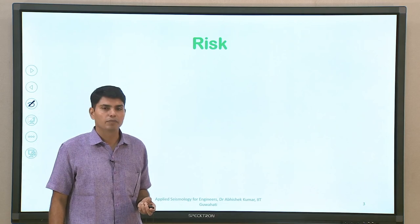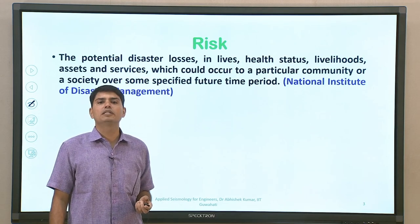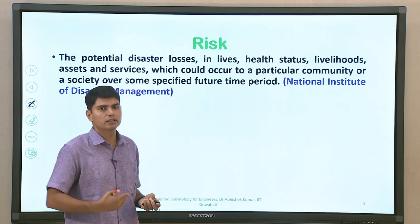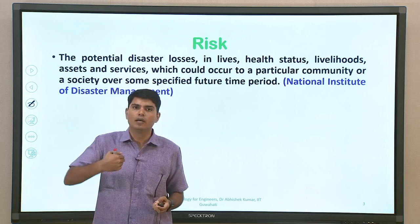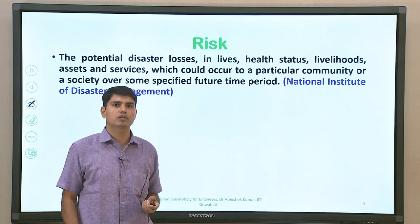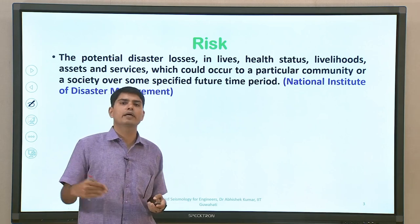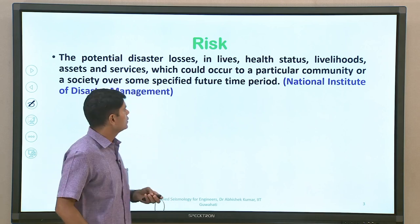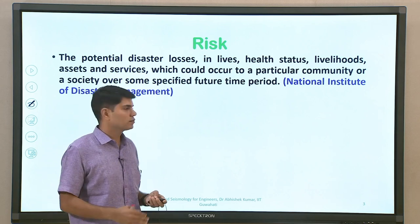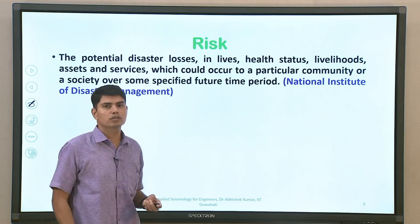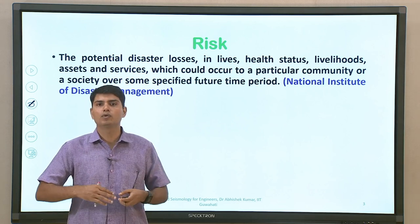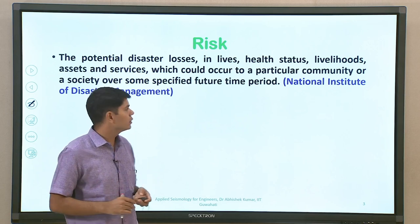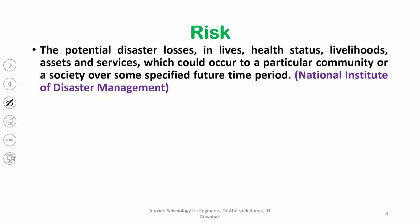When talking about seismic risk, it is basically how much potential disaster loss is going to occur. If talking about seismic risk for one particular earthquake scenario or a region, we take into account potential scenarios and determine the risk. This involves property loss, health loss, life loss, livelihood loss — people losing entire buildings where offices were set up, markets, shops — and also infrastructure and services such as telecommunication, health services, and gas pipelines getting badly affected.